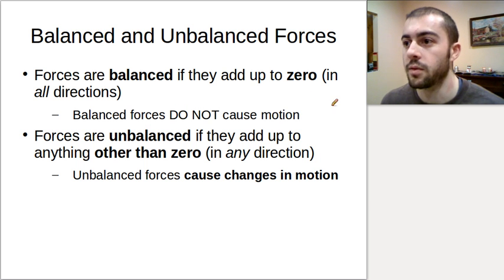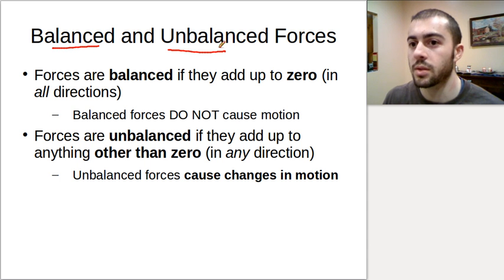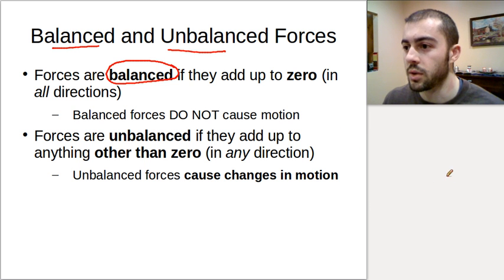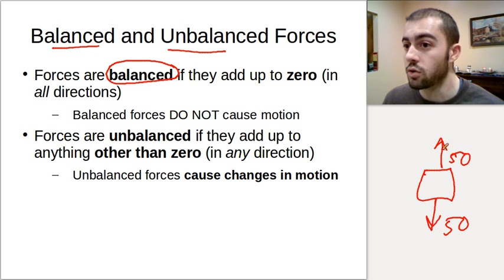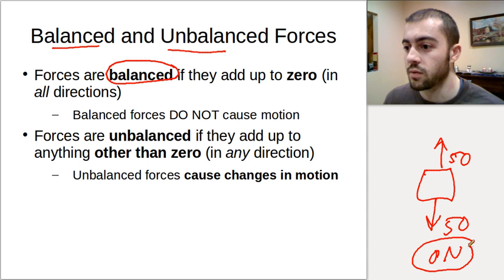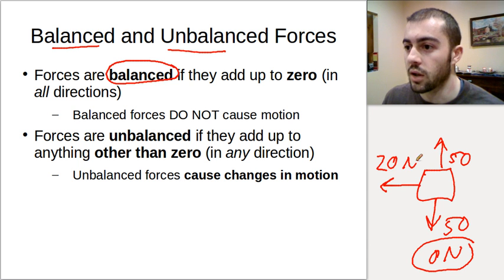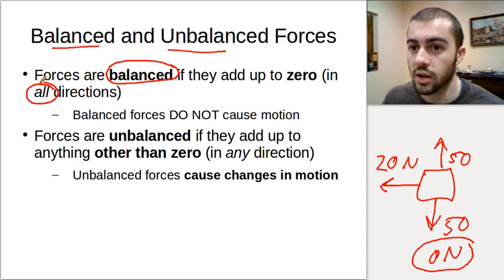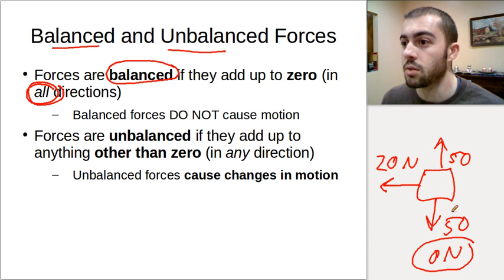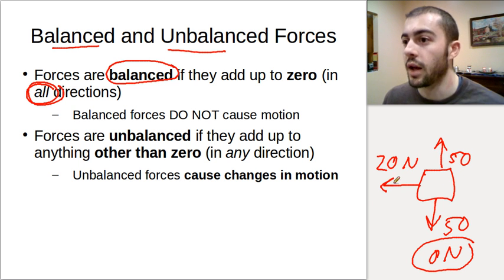The last thing we need to talk about in terms of combining forces is balanced and unbalanced forces. Forces are balanced if they add up to 0. In the example where we had 50 newtons going up and 50 newtons going down, the forces in the vertical direction were balanced because they added up to 0 newtons. But as soon as we add in the 20-newton force going to the left, the forces are no longer balanced, because the forces must add up to 0 in all directions. So we had forces that added up to 0 in the vertical direction but not in the horizontal direction - therefore the forces are not balanced overall.